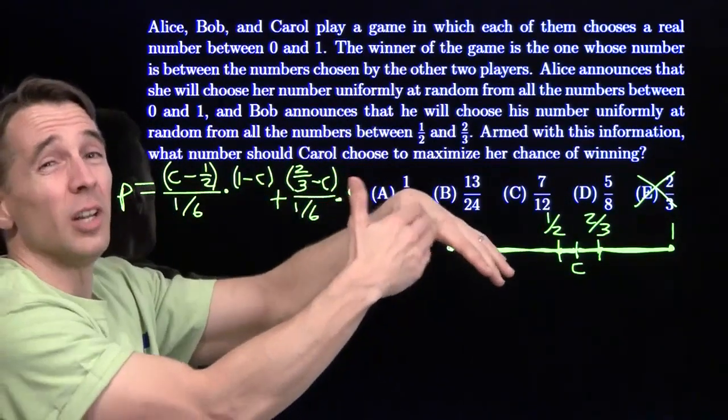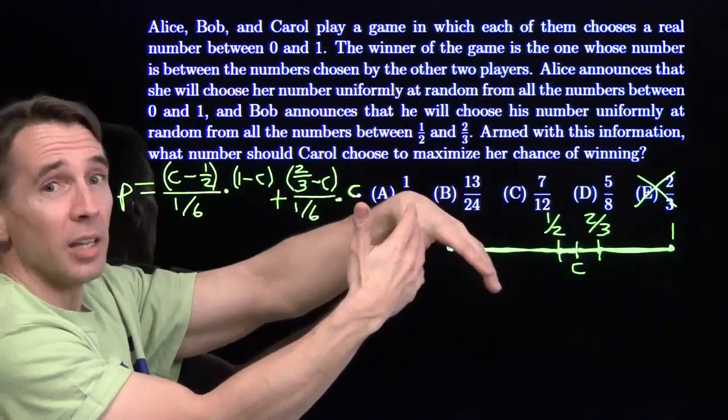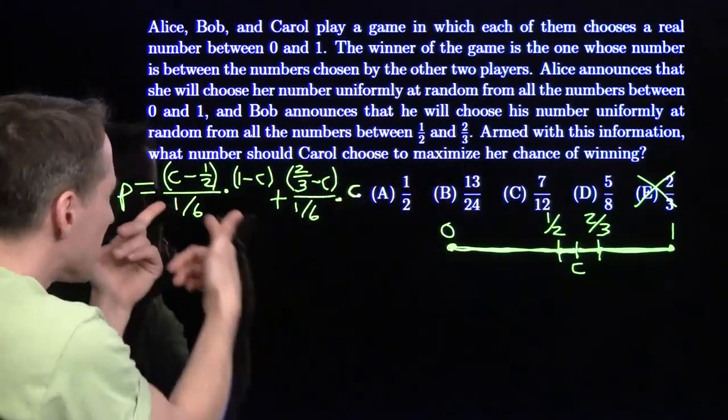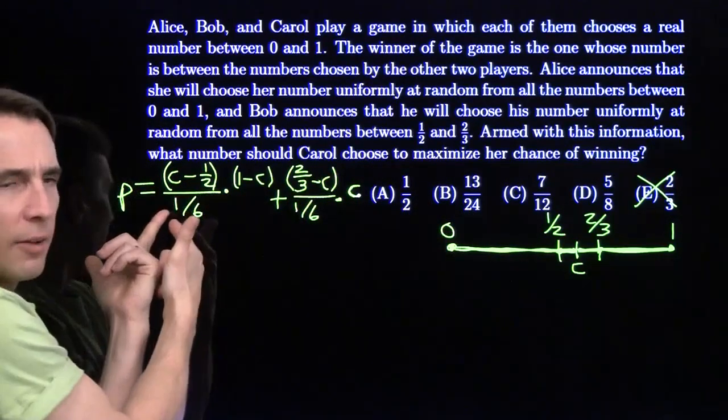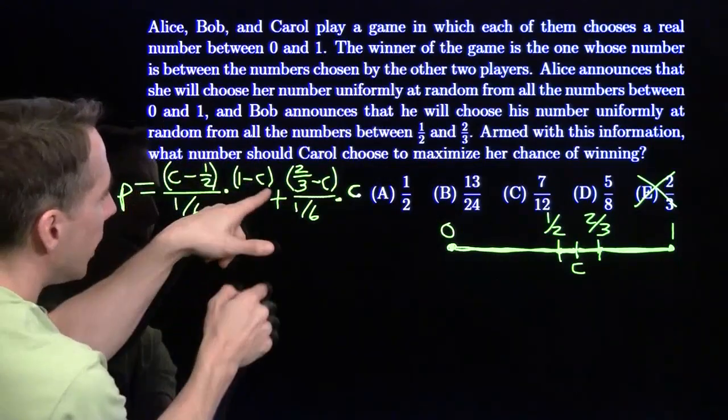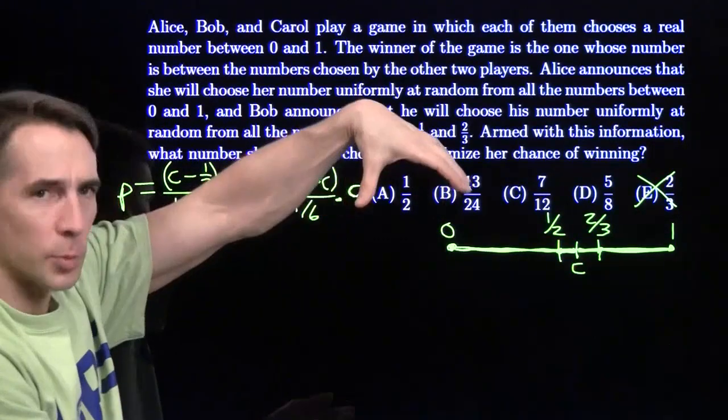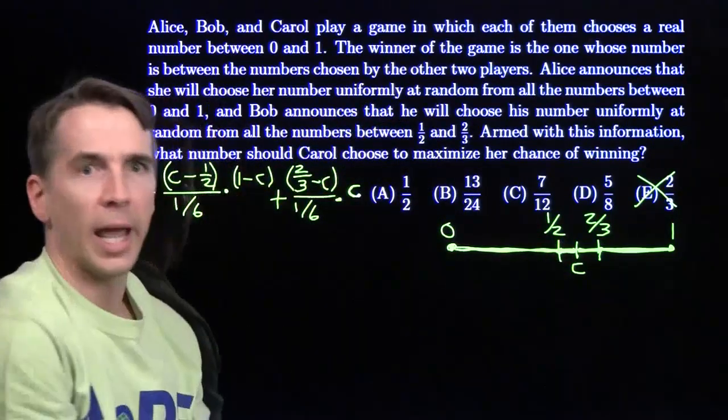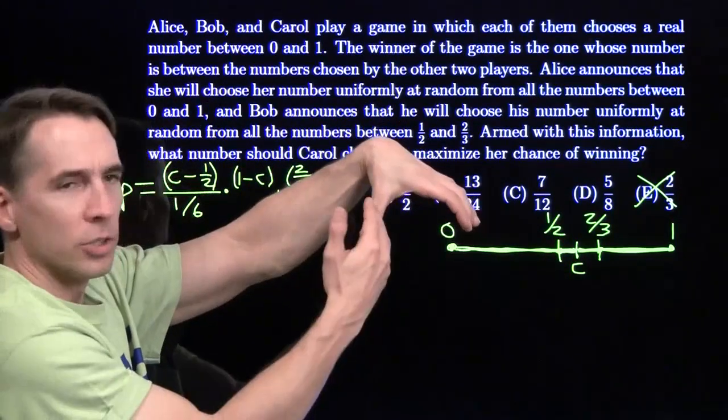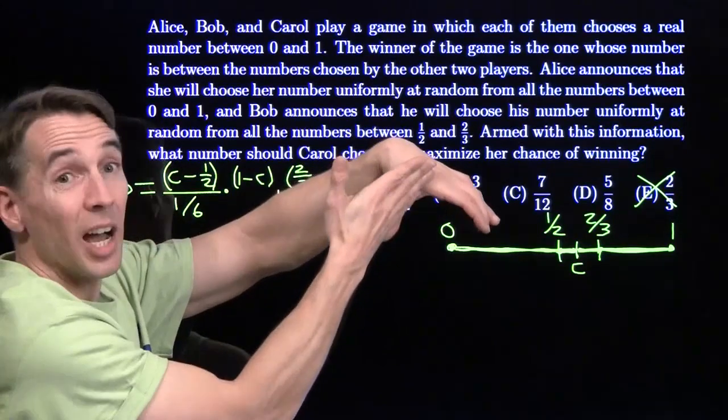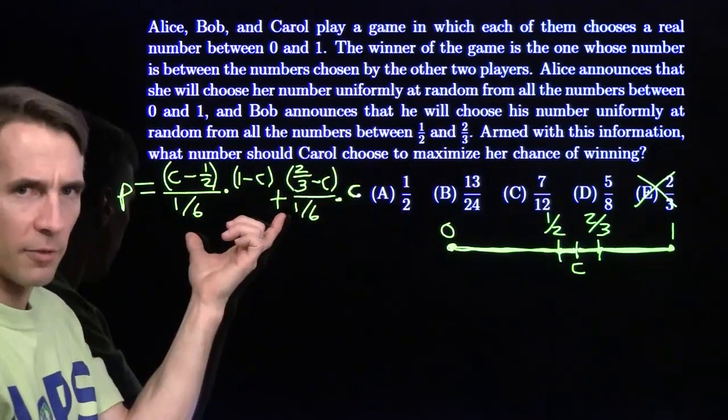I know it's going to beat 1/2, or at least tie it, because look what happens when I put C = 1/2 in here. This term goes away, and this term we get (1/6)/(1/6) times 1/2, which equals 1/2. So this parabola goes through the point where Carol's at 1/2 and the probability comes out 1/2. If the vertex is anything else, it's going to be higher. So let's find that vertex.